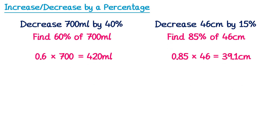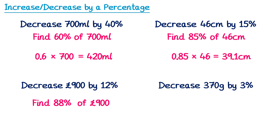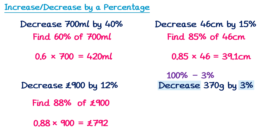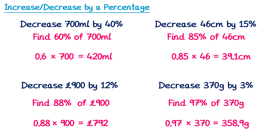Here are two more decreases to try. For the first, decrease by 12%: 100% − 12% = 88%. Find 88% of £900: 88 divided by 100 is 0.88, multiplied by 900, gives £792. For the second, decrease by 3%: 100% − 3% = 97%. Find 97% of 370: 97 divided by 100 is 0.97, multiplied by 370, gives 358.9 grams.